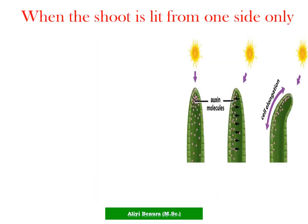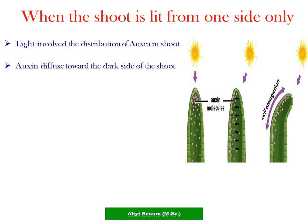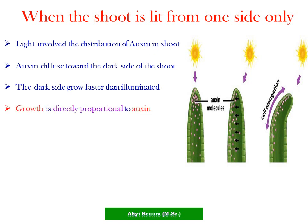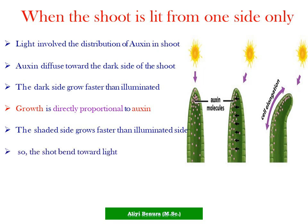When the shoot receives light from one side only, light influences the direction of auxin in the shoots. Auxin diffuses toward the dark side of the shoot. The dark side grows faster than the illuminated one, as growth is directly proportional to auxin concentration. The shaded side grows faster than the illuminated side, so the shoot bends toward the light.